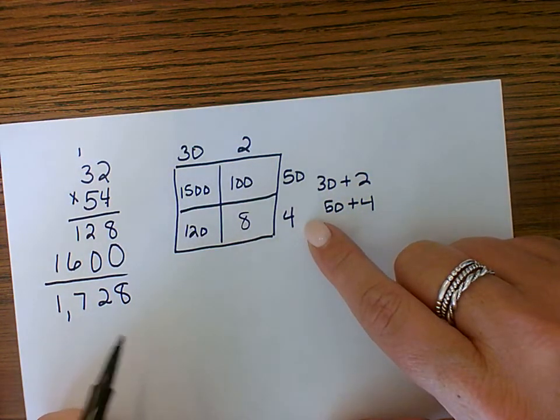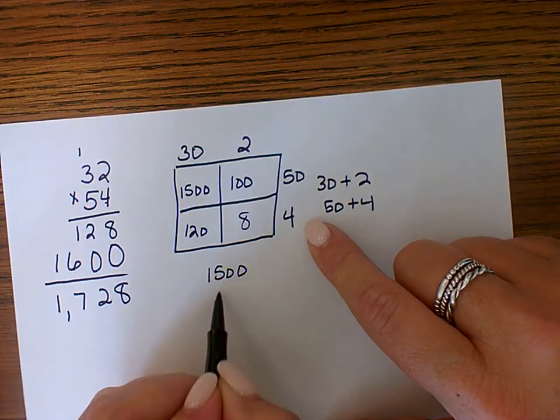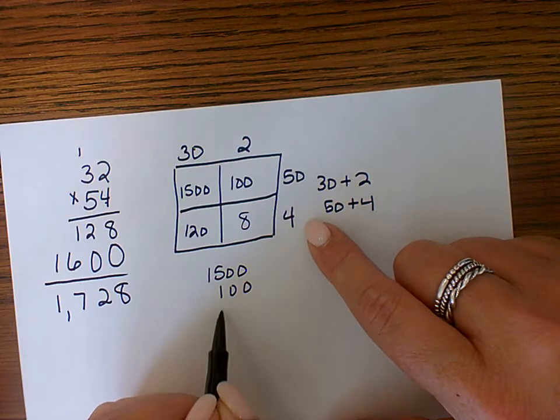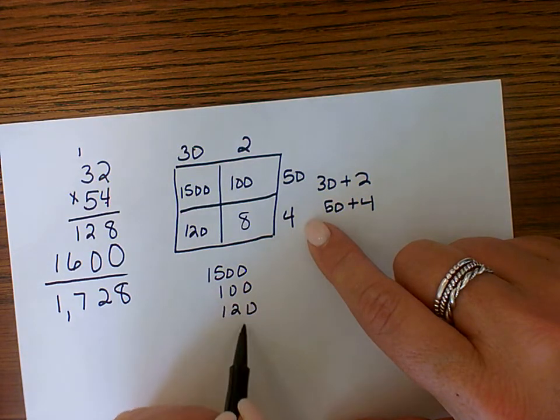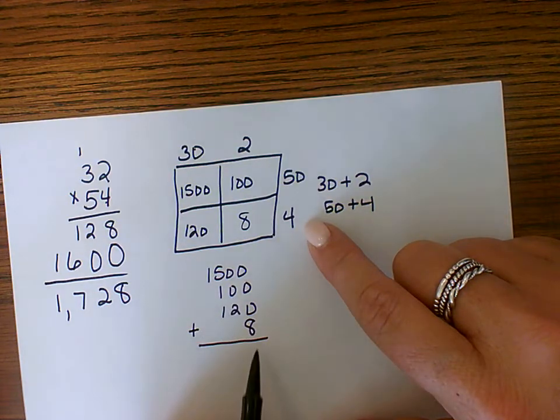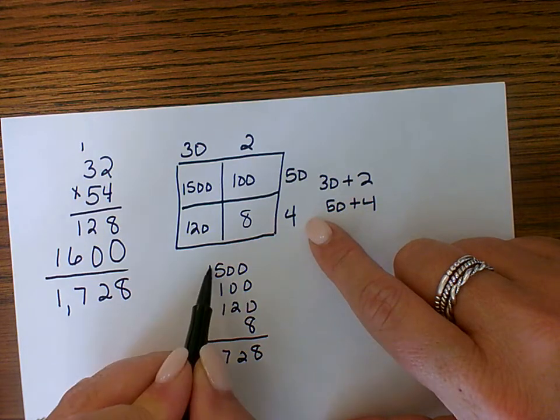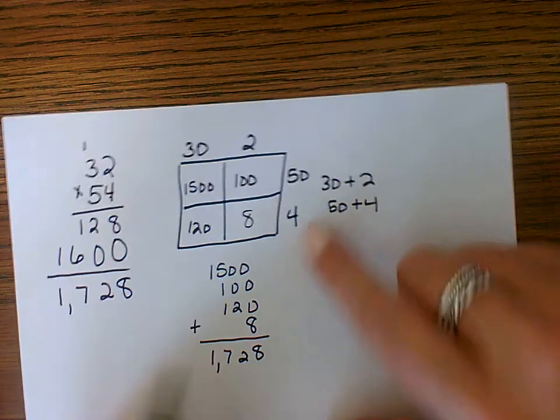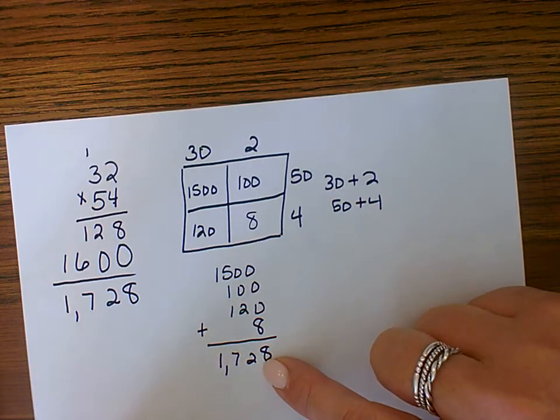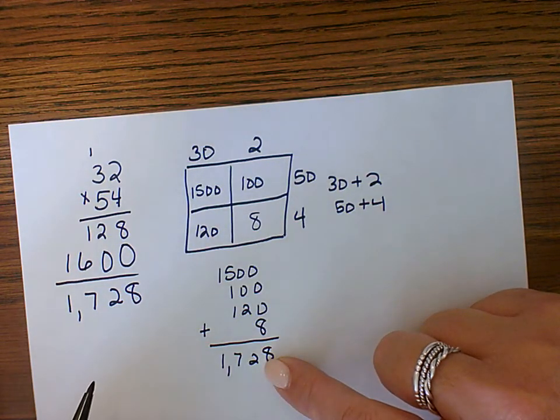And then all your child has to do is just add them up. 1,500 plus 100 plus 120 plus 8. And it's really easy to get the exact same answer that you would get if you were doing it the traditional way. And just some students, in fact, a lot of students do find the box method easier.